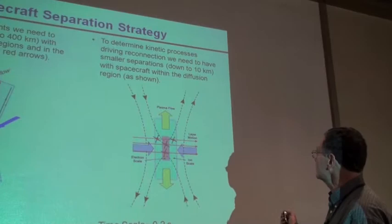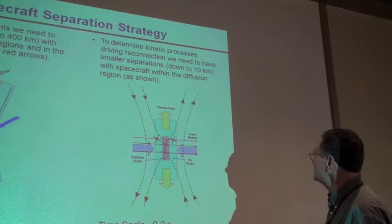Let's say the Earth is to the right, sun is to the left, and this is a very thin current layer with these plasma jets that flow out of this reconnection region.